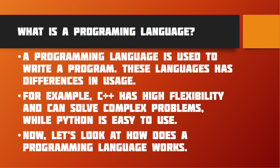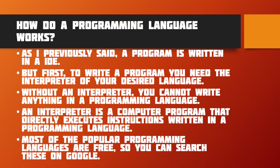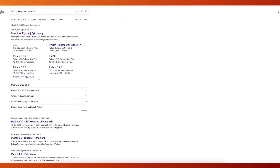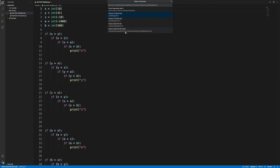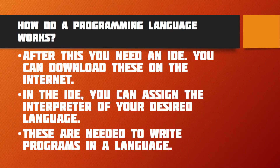Let's look at how a programming language works. A program is written in an IDE. But first, to write a program, you need the interpreter of your chosen language. Without an interpreter, you cannot write anything in a programming language. An interpreter is a computer program that directly executes instructions written in a programming language. Most programming languages are free, so you can search for them on Google. After this, you need an IDE, which you can download from the internet. In the IDE, you can assign the interpreter of your desired language. These are needed to write programs in a language.